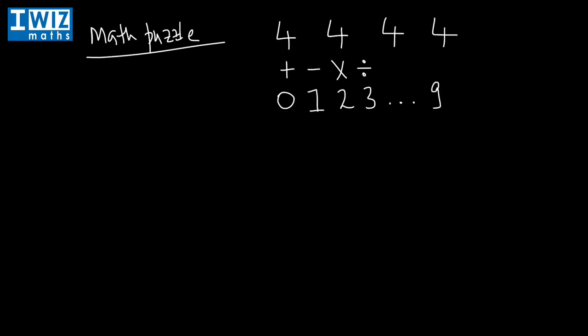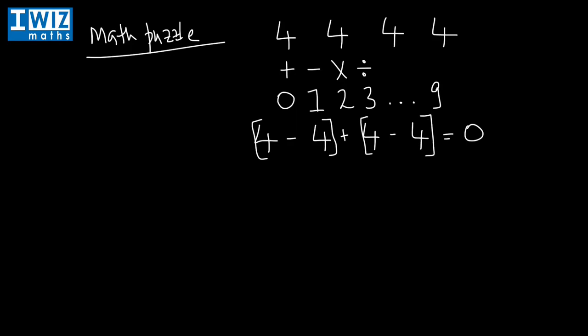So you're meant to get zero, one, two, three, four, five, six, seven, eight, and nine. Let's start with zero. We have four fours — four, four, four, and four — and we're expected to get to zero. We can do that by saying four minus four, which is zero, plus four minus four, which is also zero. So zero plus zero is simply zero.